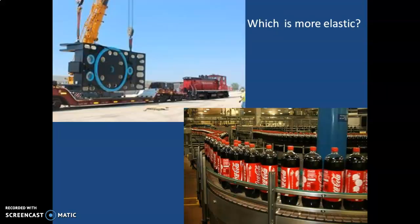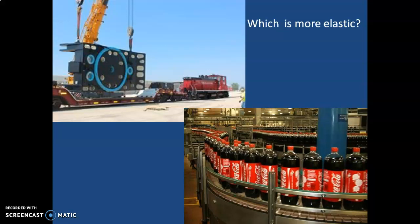Consider two products: one is a large machine made right here in Rockford, Illinois, used to make the fuselage of airplanes — it costs around a million dollars. The other is Coca-Cola. Which is more elastic? Coca-Cola is far more elastic. The fuselage machine has high production costs and if input prices change, producers can't respond quickly — they've already invested heavily. Coca-Cola, on the other hand, can respond to price changes much more quickly.